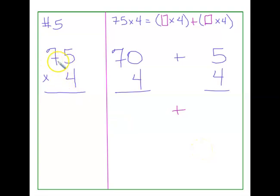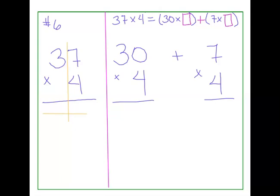So problem number 5 is 75 times 4. 75 times 4. And then you need to figure out what goes up in there. Remember, you have a few examples already. Problem number 6, your last problem, is 37 times 4. 37 times 4. And fill in the two boxes up here. Make sure you pay attention, because it's not exactly the same as problem number 5. But, I'm sure you've got this. Go for it!